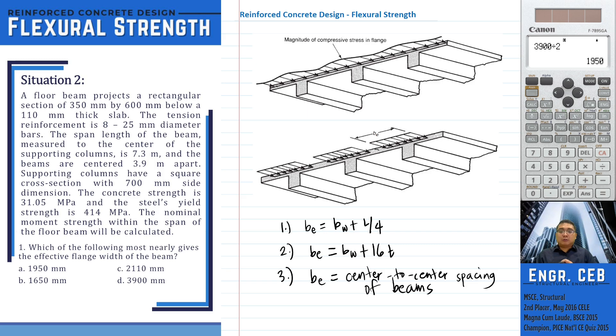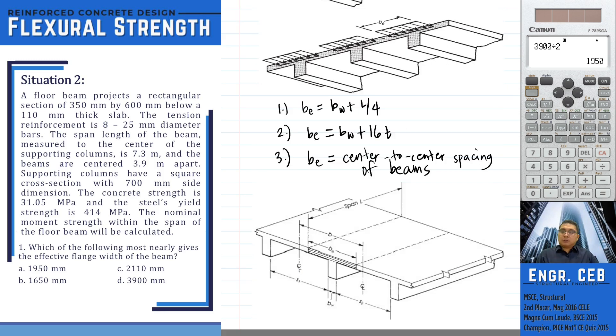To determine the governing effective flange width, we will solve for the three, and then the smallest among the three is the considered effective flange width.